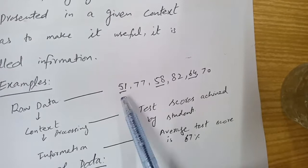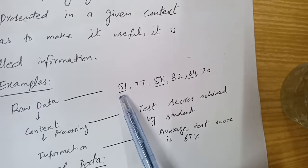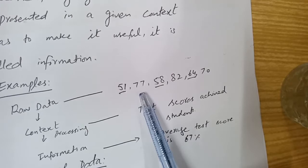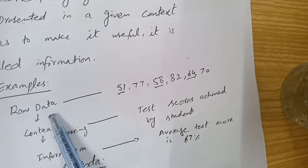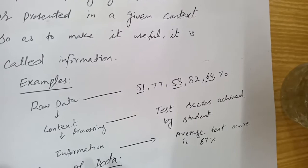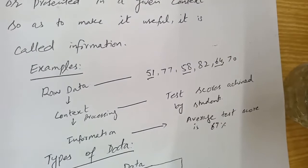We get the information that these are the individual student scores and the average is 67%. This is useful — we can estimate that student number 1 scored below average, others scored above average, and so on. When we process raw data, it becomes information. This was an example of data and how we make it into information.